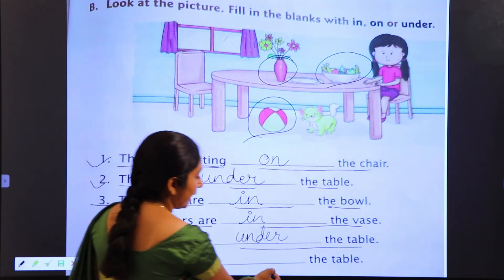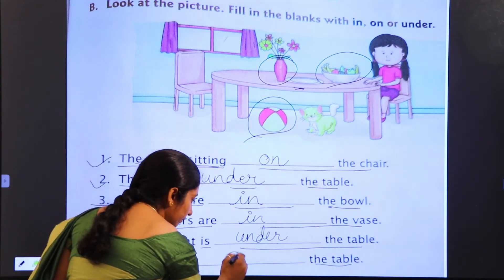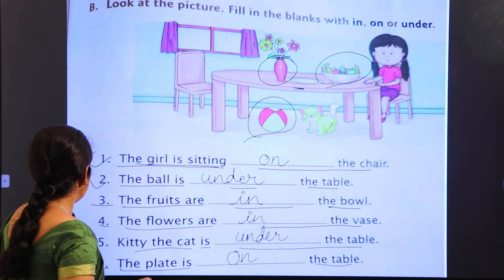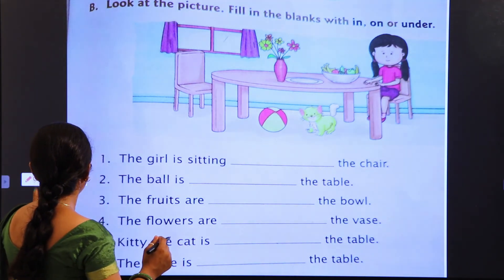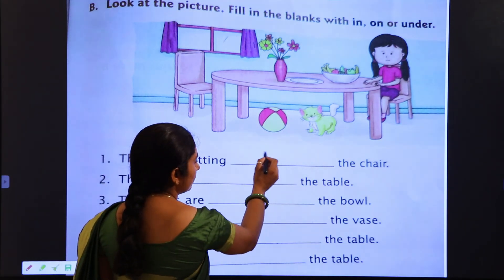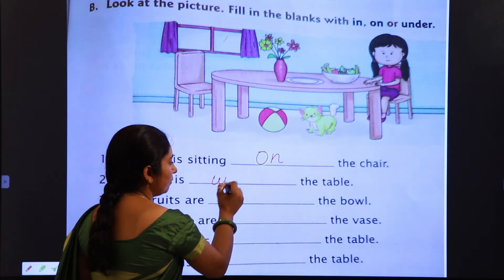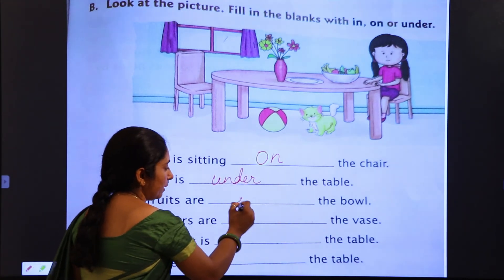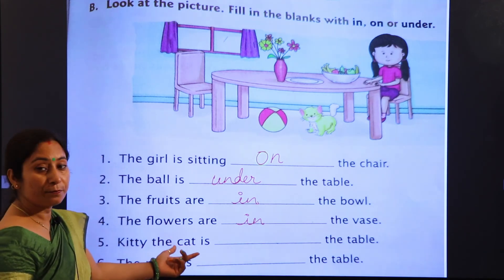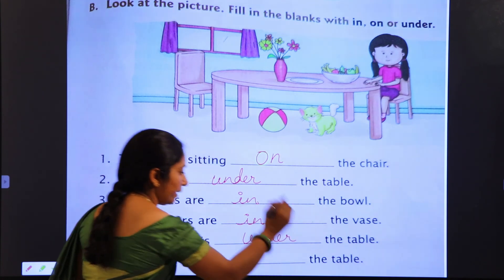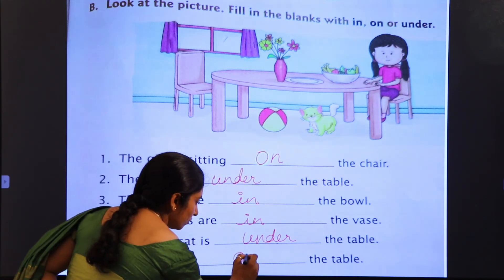The plate is [dash] the table — plate table ke upar hai, toh upar ke liye 'on': the plate is on the table. Now let's revise: the girl is sitting on the chair. The bowl is under the table. The fruits are in the bowl. The flowers are in the vase. Kitty the cat is under the table. The plate is on the table.